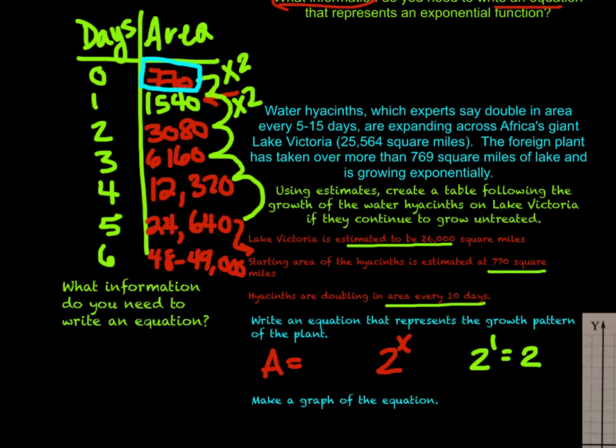If I say 2 times 770, I'll get this 1,540. So I'm going to add in my initial value of 770 square miles as our initial value. So here is our equation.